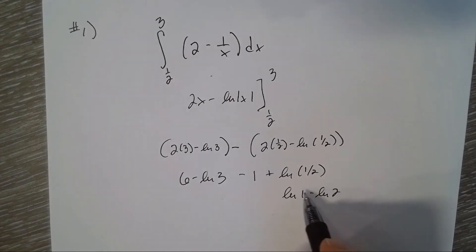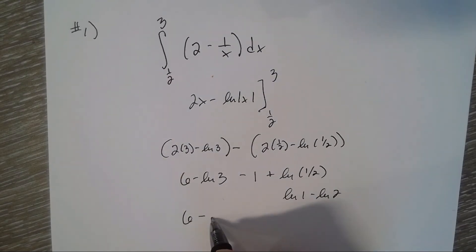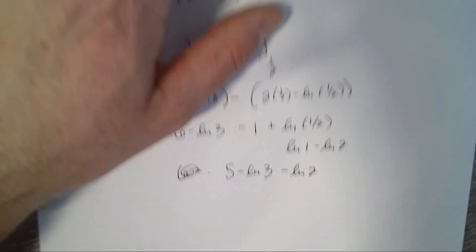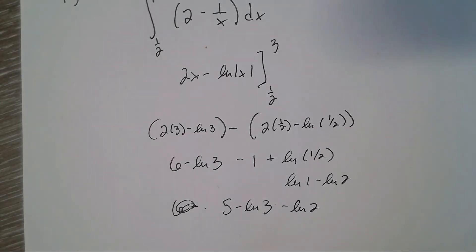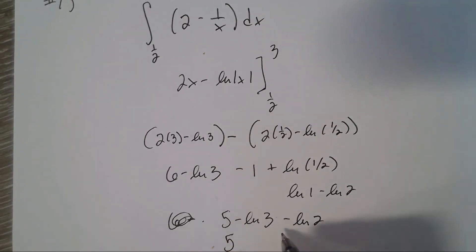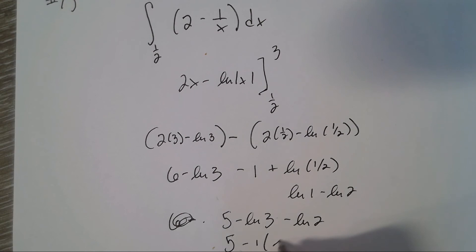So all of these are versions of the correct answer. We can combine those: natural log of 3 plus natural log of 2, which equals natural log of 6.